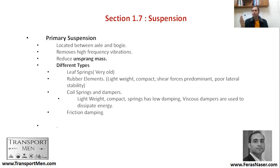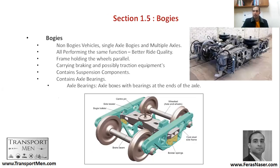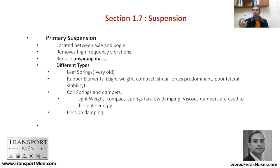The frequency of the unsprung mass is not removed through the suspension system. There are different types: the leaf spring is very old and is a friction-based damping system. Rubber elements are lightweight, compact, and shear-force predominant, but they have more lateral stability. Coil springs and dampers are the most common — the coil spring provides the spring force and the damper does the damping through viscous action, converting kinetic energy into thermal energy.